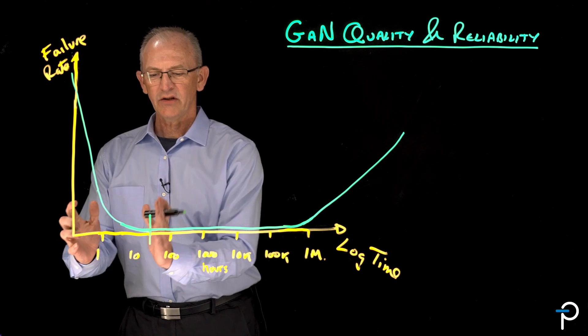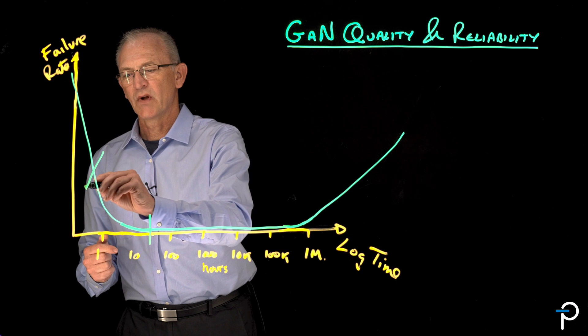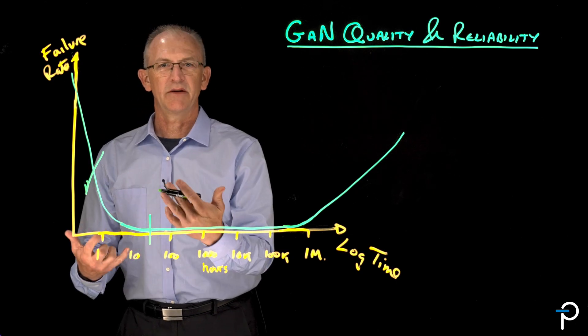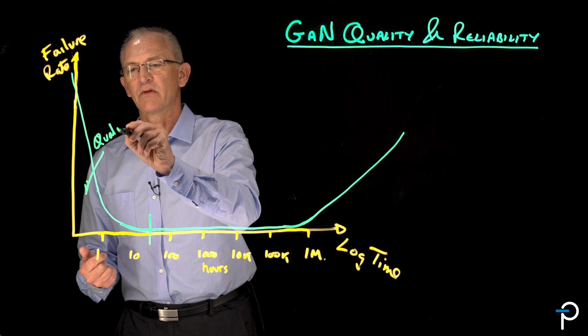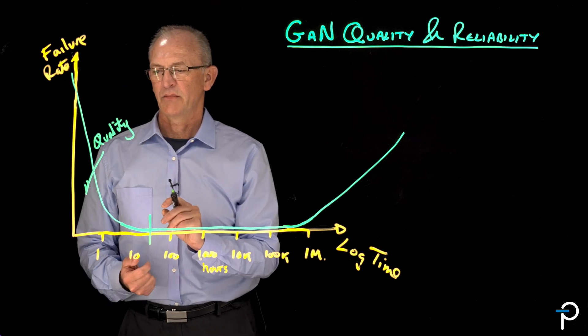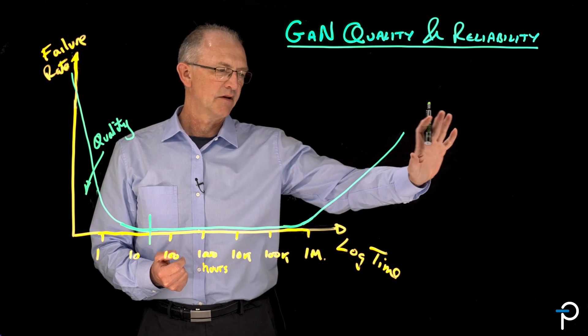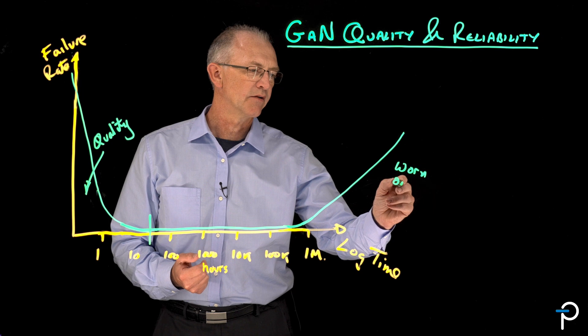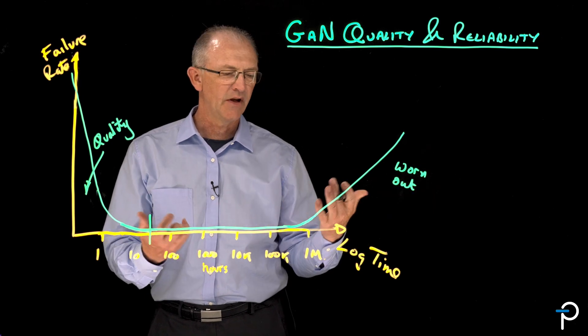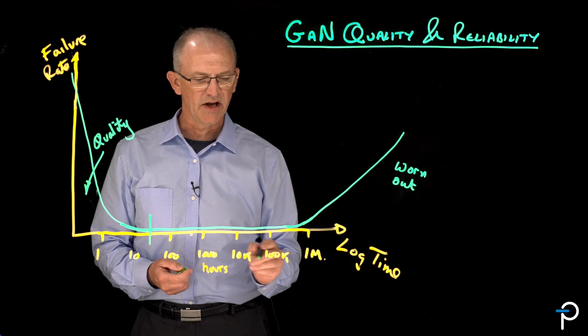In the early phase of a product's life, you get quality-related mismanufactured products. So this is our initial quality part of the bathtub curve. In the far distant time, you have parts that are worn out. Some kind of failure mode has been exercised over time, and these parts have worn out.